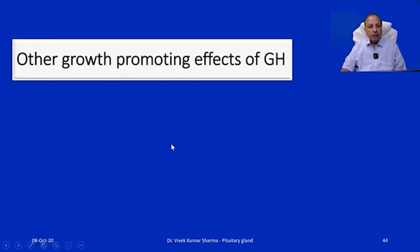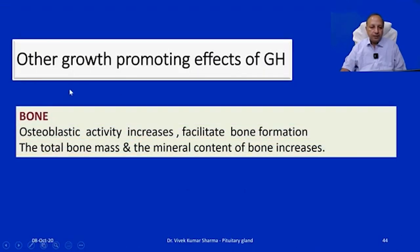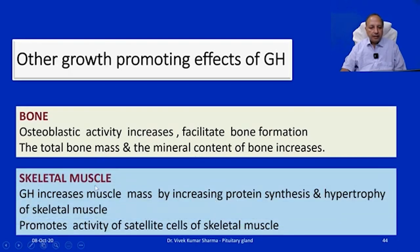Other growth promoting effects: in bone, increased osteoblastic activity facilitates bone formation, increasing total bone mass and mineral content. In skeletal muscle, growth hormone causes an increase in muscle mass by increasing protein synthesis and hypertrophy of skeletal muscle, and by promoting the activity of satellite cells of the skeletal muscle.